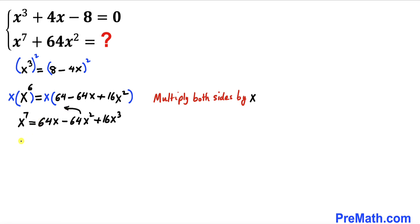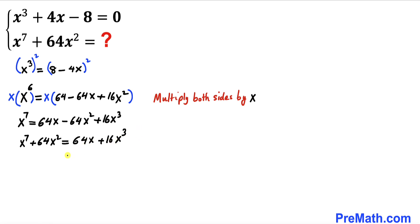Now let's move the -64x² term to the left hand side, so we have x⁷ + 64x² = 64x + 16x³. On the right hand side, 16 is common, so we can factor it out, giving us 16(x³ + 4x).